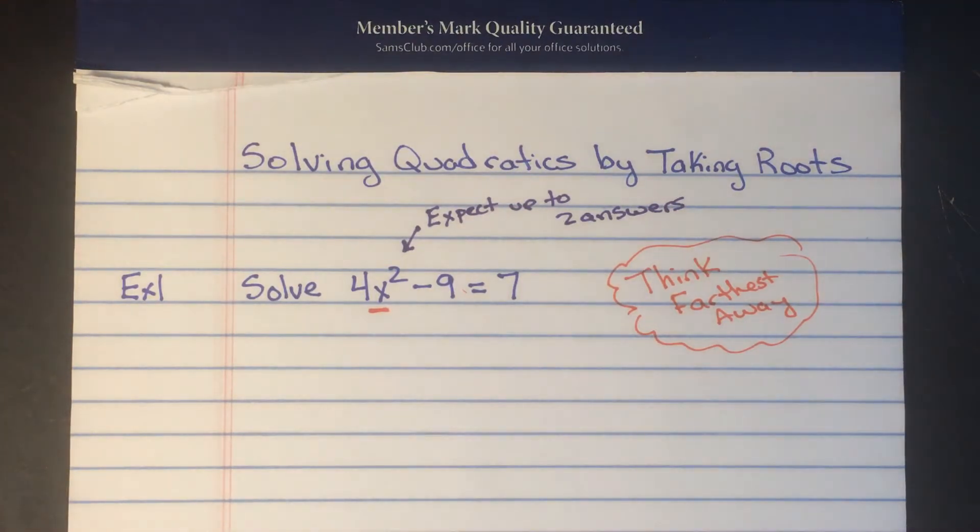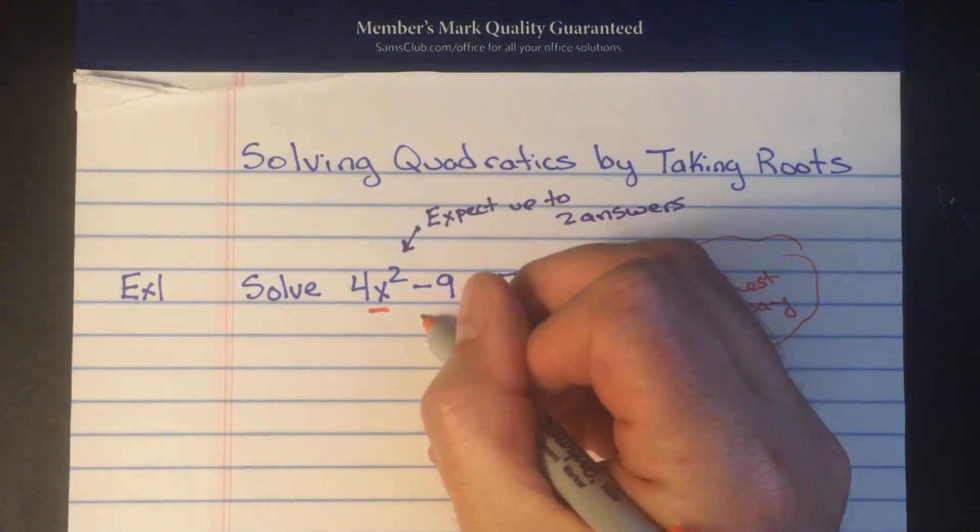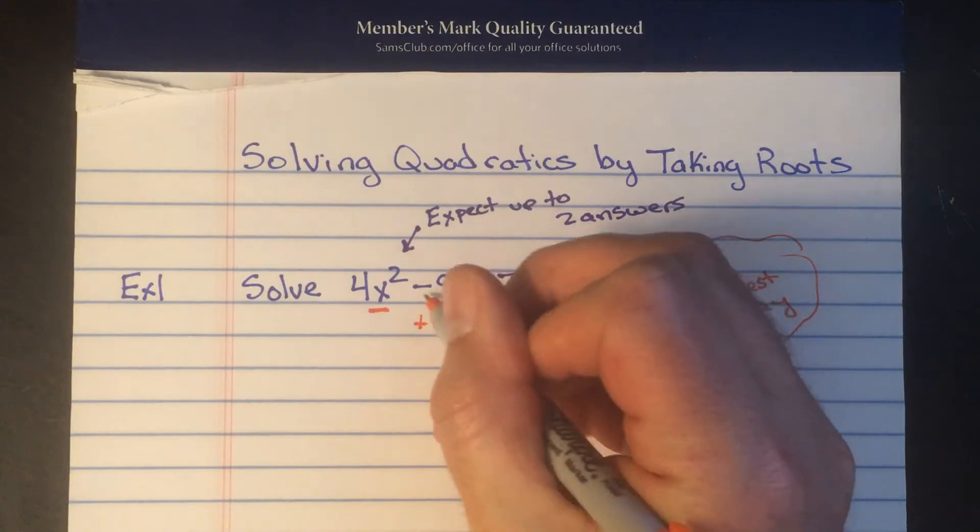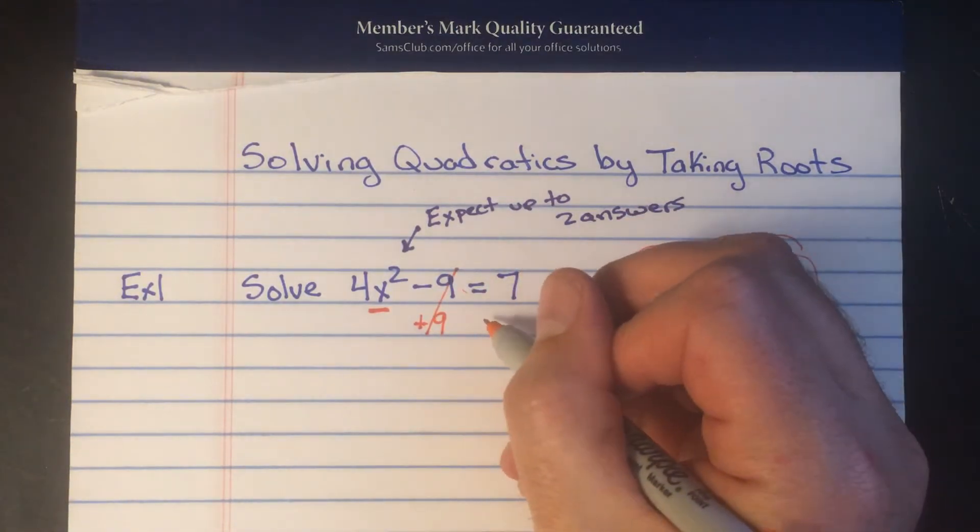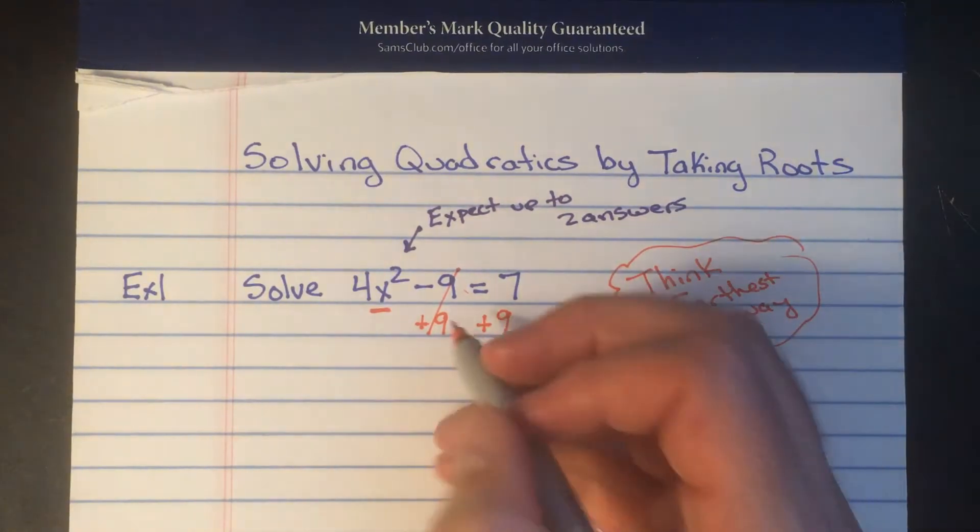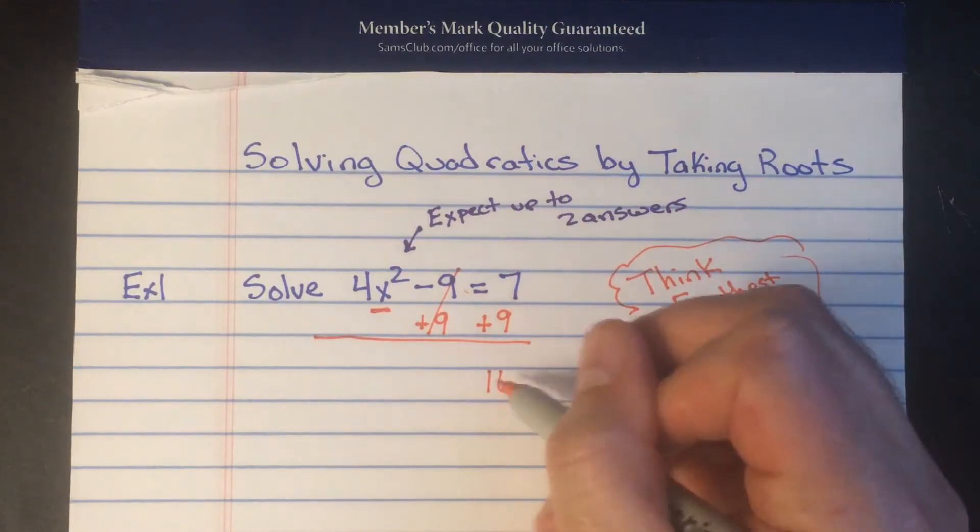So to start we're gonna start farthest away from the x. That's gonna be the minus nine. To undo the minus nine we're just gonna add nine because negative nine plus nine is zero. To keep everything equal using that additive property of equality, we're gonna add nine to the other side. Seven plus nine is 16. Nine's canceled out and we have 4x squared equals 16.